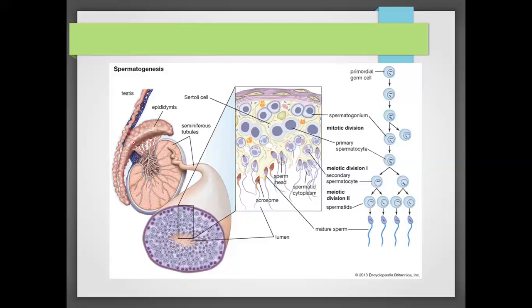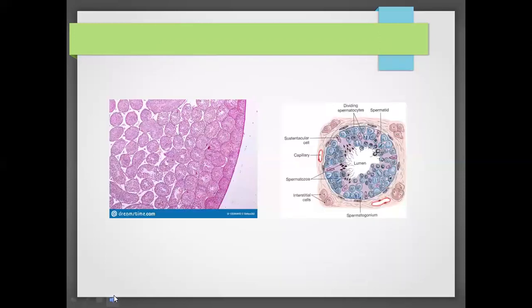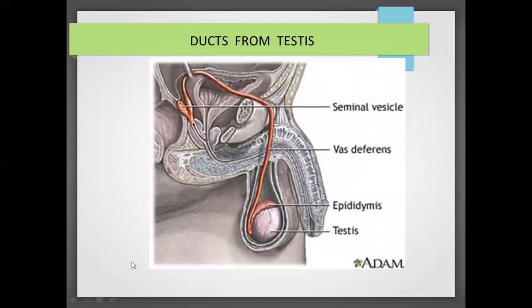What is the function of spermatogonia in the seminiferous tubule? The function of spermatogonia is to produce sperm. Now, trace the movement of sperm — let's follow how sperm moves from the site of its production.